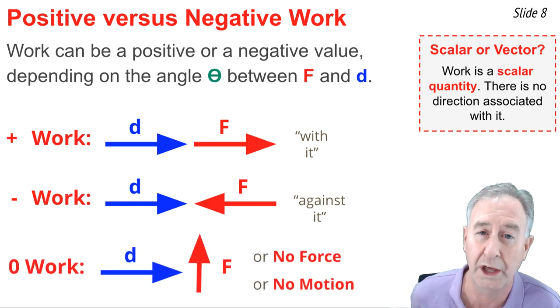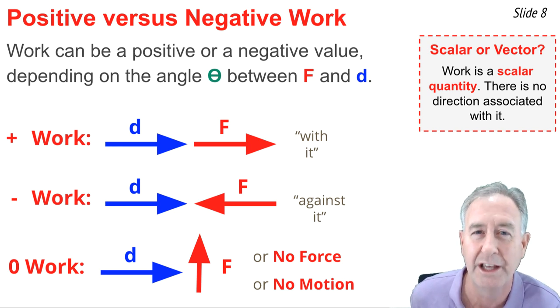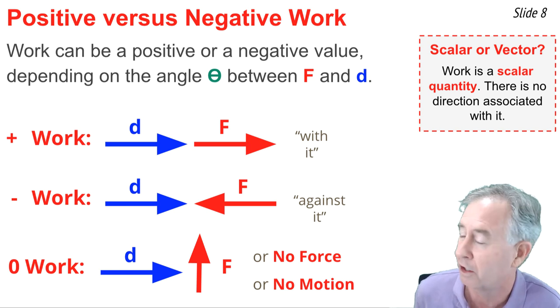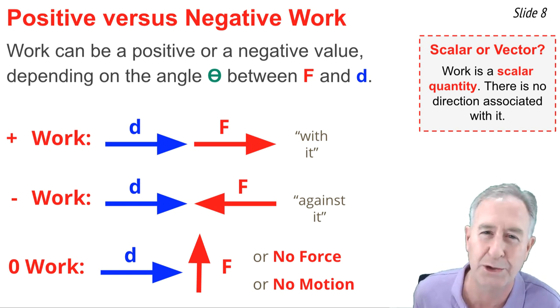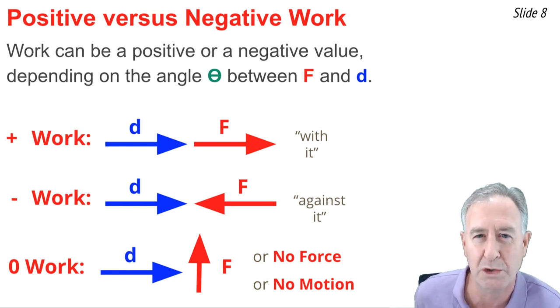If the force is neither with nor against the motion, but at right angles to the motion, then the angle between the force and the displacement vector is 90 degrees, the cosine of 90 degrees is zero, and the work is zero joules. In these situations, we have positive and negative work being done whenever there is a component of force with or against the motion.